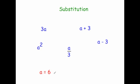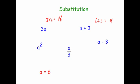Let's let a equal 6 and work out what these five expressions equal. So 3 times a: because a is 6, that's 3 times 6, and 3 sixes is equal to 18. Next, a plus 3: that's going to be 6 plus 3, because a is equal to 6, and 6 plus 3 is equal to 9.